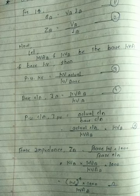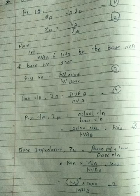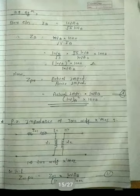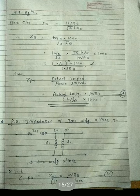Now we calculate Z base. The formula is: Z base = (kV base)² × 1000 / kVA base. This gives us the base impedance Z_b for a single phase system.